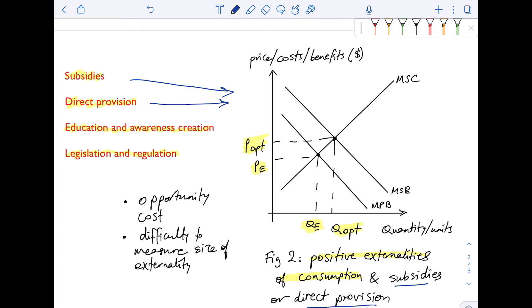The MSB is higher than the MPB, subsidies and direct provision will actually shift the MSC curve to the right from MSC to MSC2.